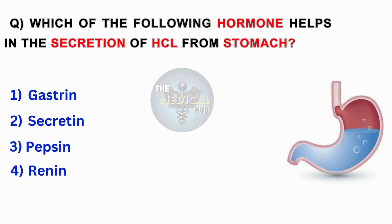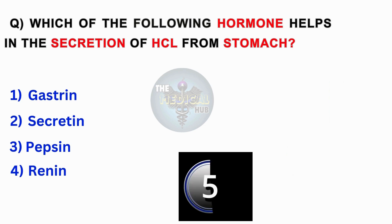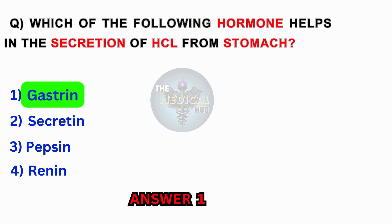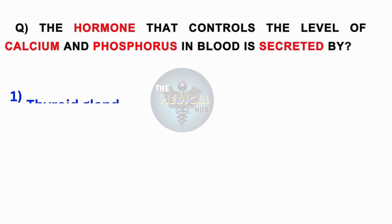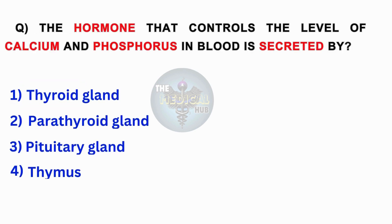Which of the following hormones helps in the secretion of HCL from the stomach? Gastrin, secretin, pepsin, renin. Answer 1: Gastrin.